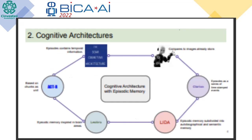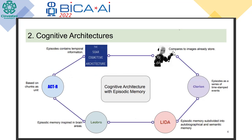Over the last 50 years, a lot of research groups have developed cognitive architectures using different approaches. The idea of the cognitive architecture is to endow creatures with human-like behavior. In this section we analyze different published architectures that contain some type of episodic memory or something similar to episodic memory.